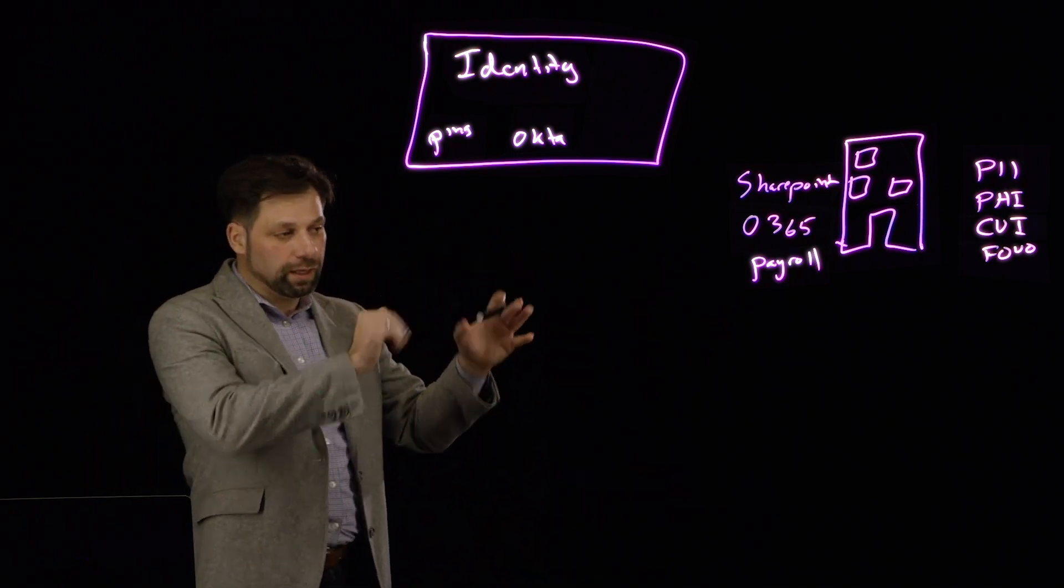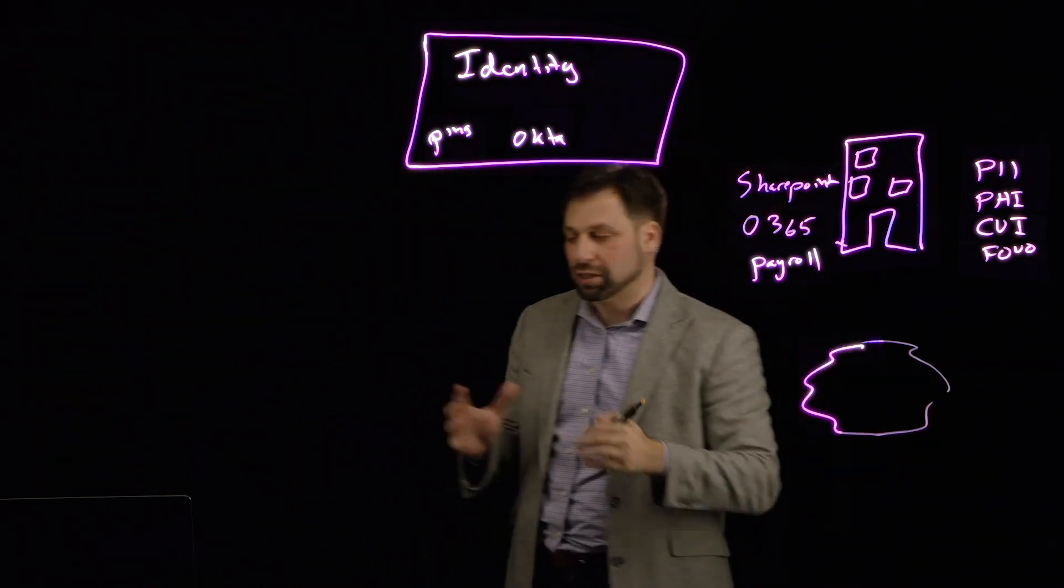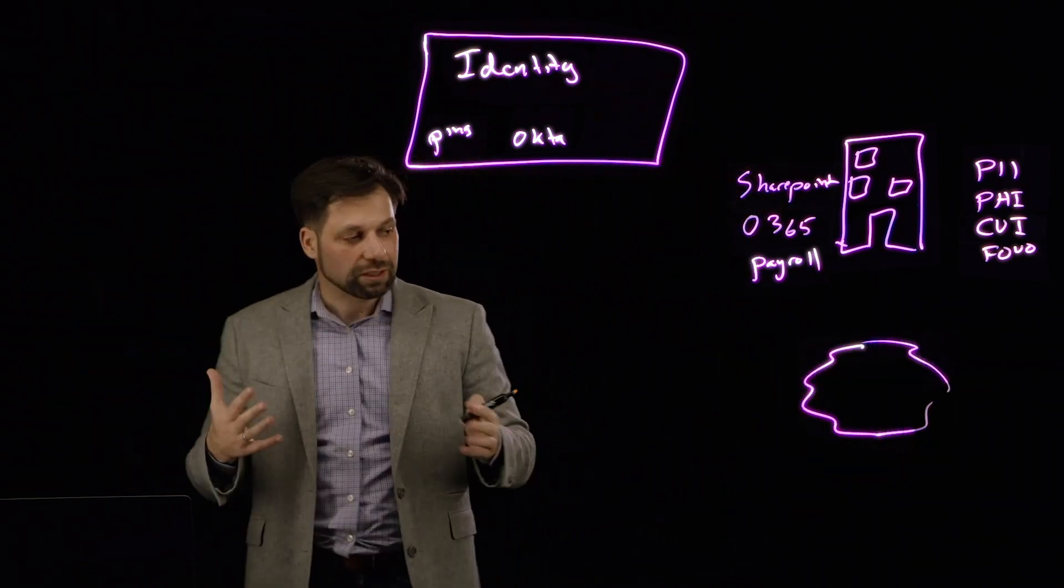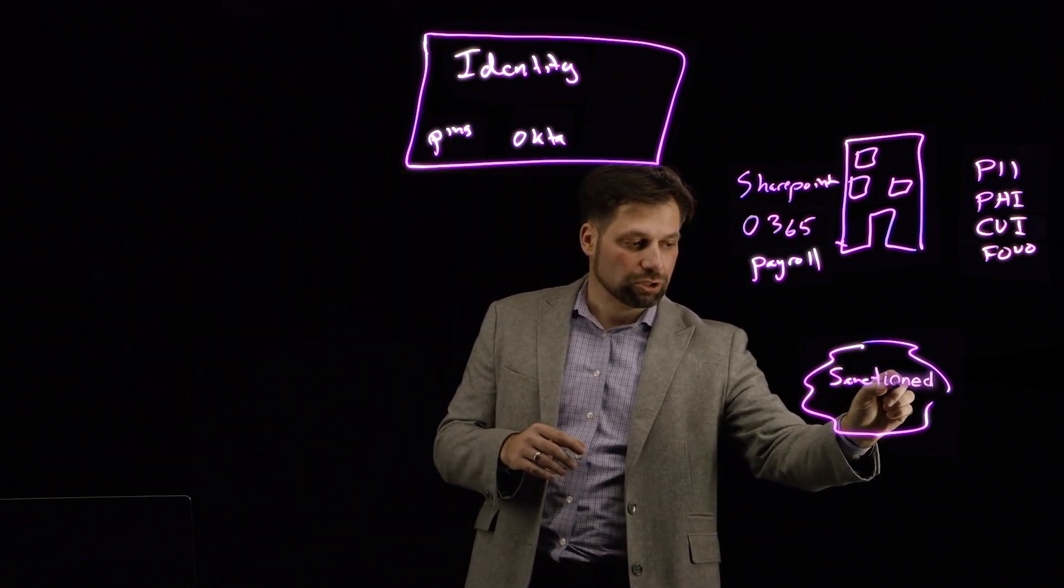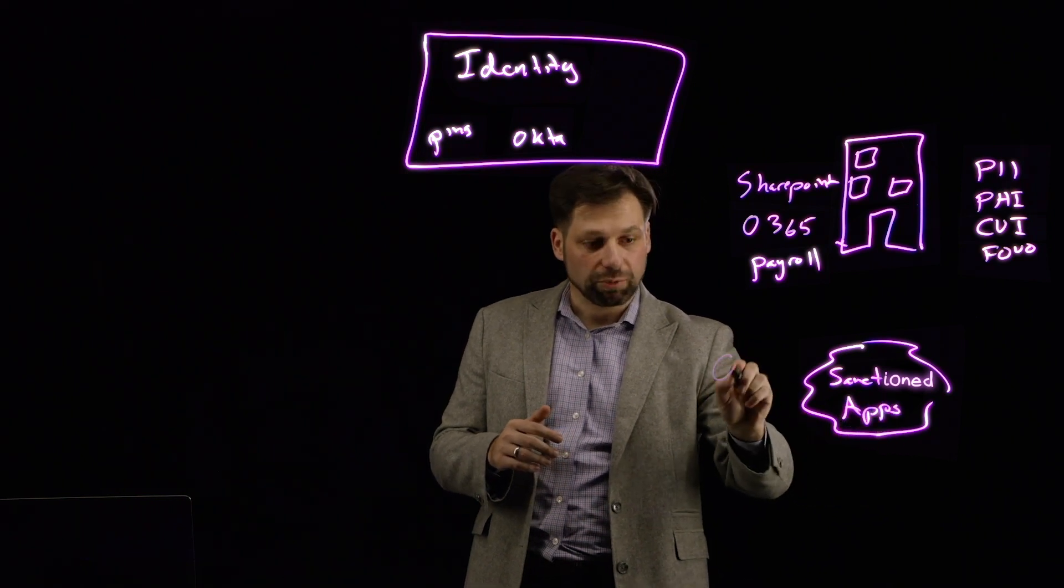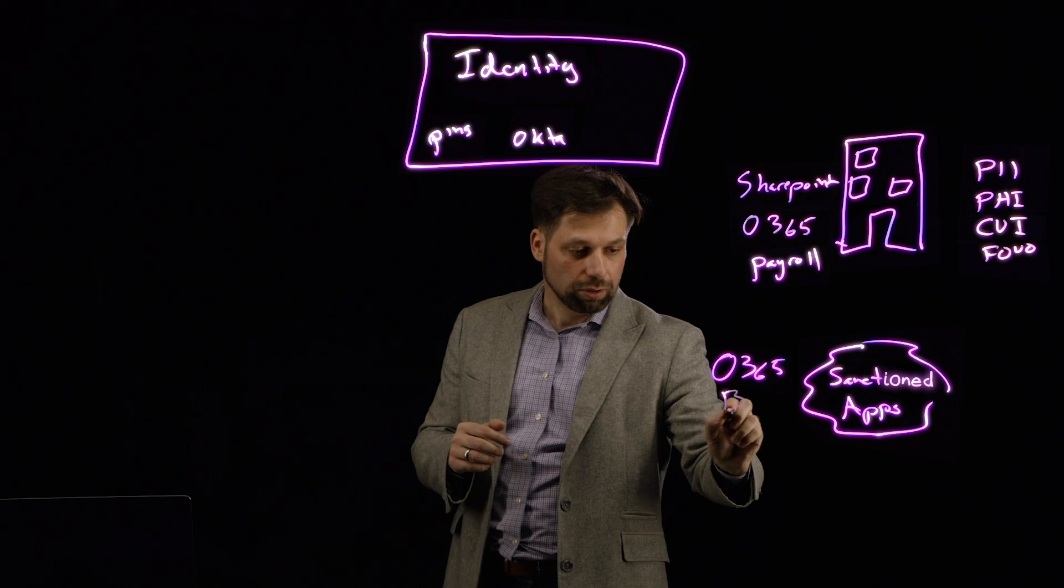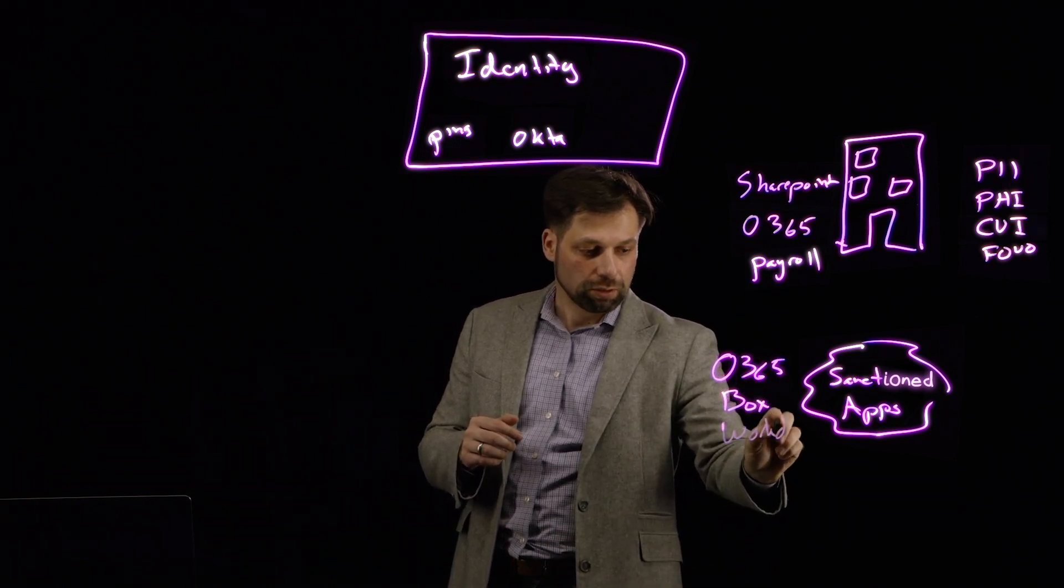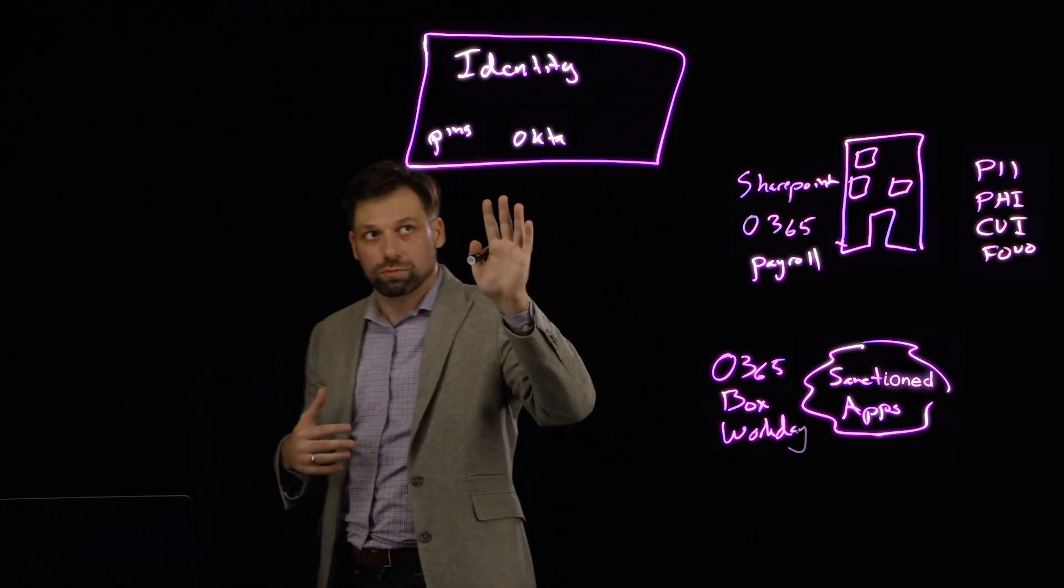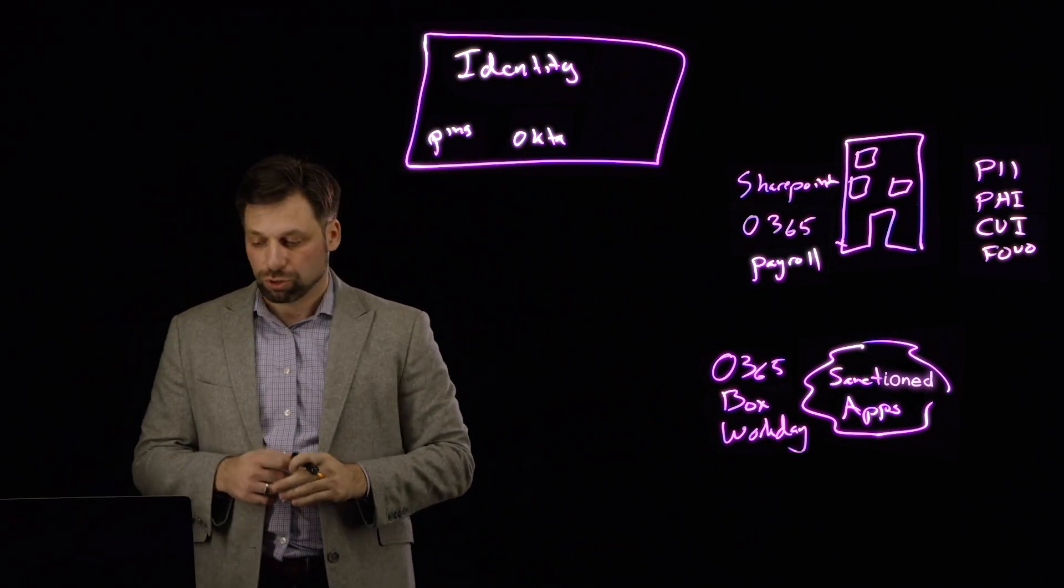Now we've put everything in the cloud. Let's say that's a sanctioned cloud, meaning sanctioned by IT, that we can use those cloud apps. Those cloud apps might be 365, might also be Box. Instead of Payroll on-prem now, I have Workday. And all of that can be controlled, at least for identity, through sanctioned apps, through an identity provider.